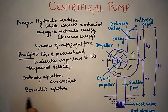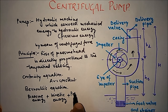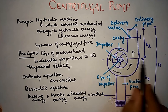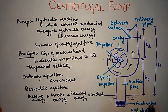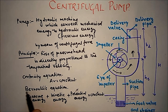Bernoulli's equation states that pressure energy plus kinetic energy plus potential energy is constant. Since the points we are considering in the casing are at the same level from the ground, we can ignore potential energy. So we get: pressure energy plus kinetic energy equals constant. If kinetic energy increases, pressure energy decreases, and if kinetic energy decreases, pressure energy increases.